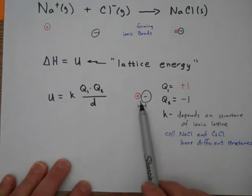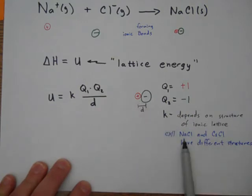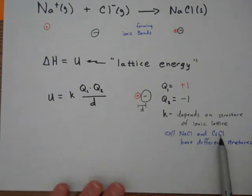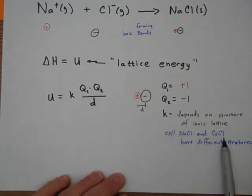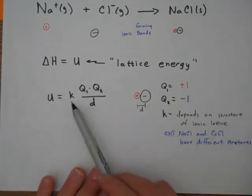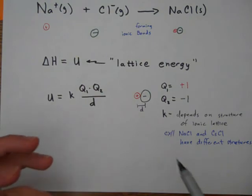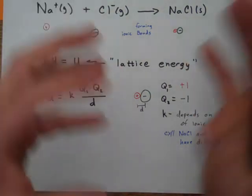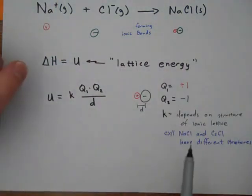For example, sodium chloride and cesium chloride have different structures. Cesium is a much bigger ion, so when packing it next to chloride, it takes different space and you arrange them differently. The whole lattice energy depends on the arrangement of all the ions and how they're pulling on each other.